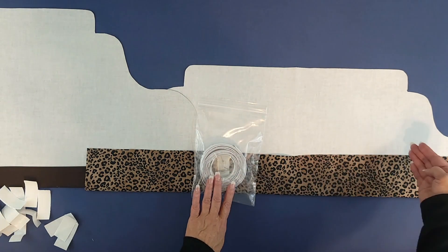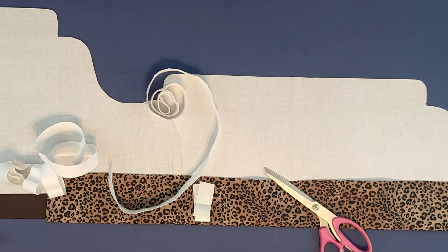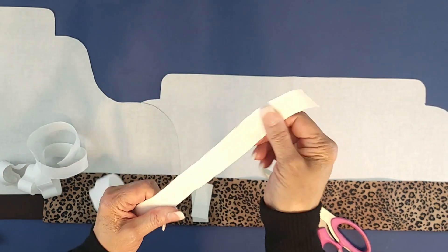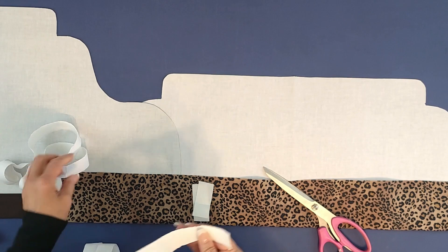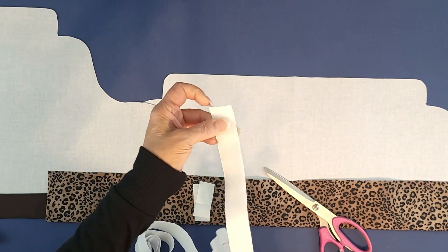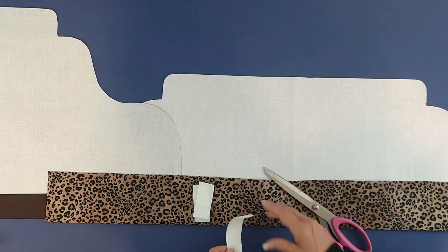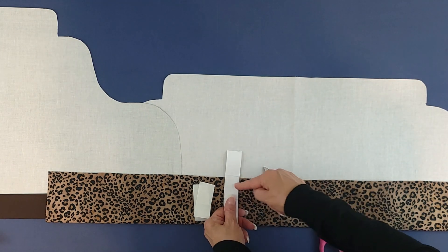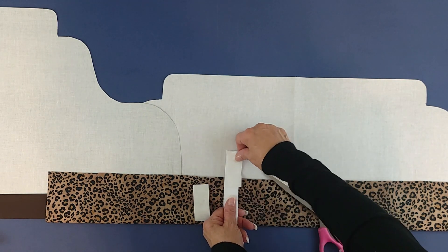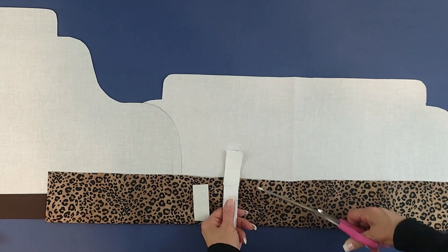Pull out your Velcro from your package. This is sticky back Velcro, but we'll be attaching these fasteners using sections of heat and bond. You have the hard and soft side of the Velcro. Cut pieces that are about two to two and a half inches long and position them across the inside section between the side panels.